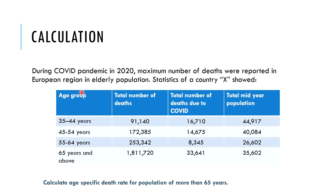During the COVID pandemic in 2020, the maximum number of deaths were reported in the European region in the elderly population. Statistics of country X show age group distribution, total deaths, COVID deaths, and mid-year population figures. As a calculation exercise, calculate the age-specific death rate for the population aged more than 65 years according to this data. Please complete this calculation before moving to the next slide.